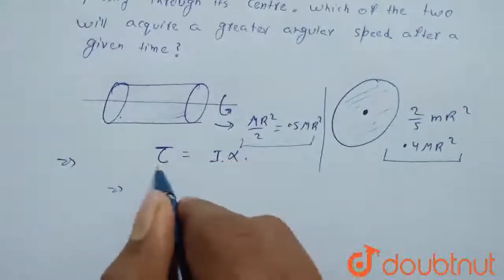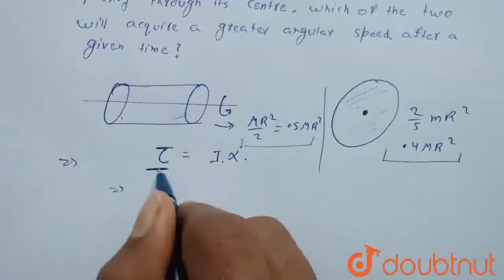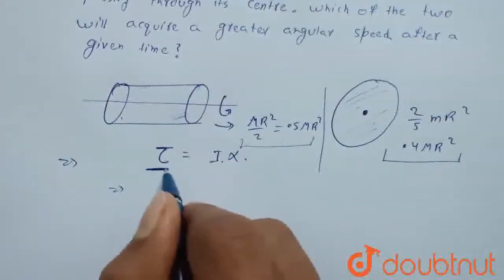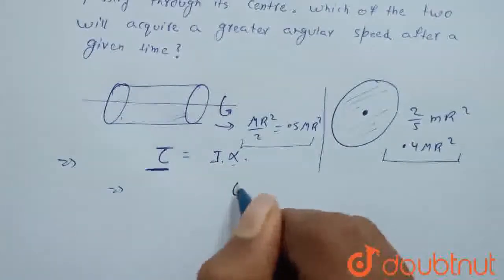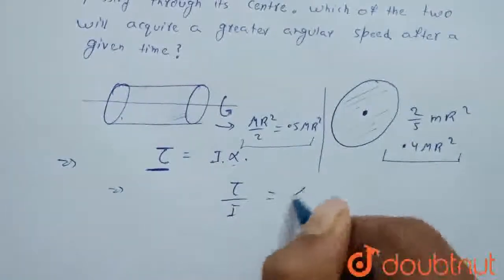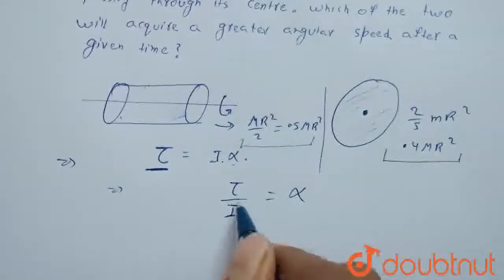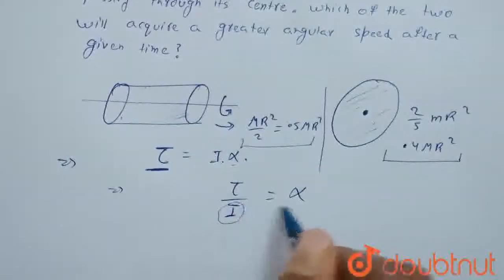If we have the same torque, then α is written as torque divided by I. So if moment of inertia is greater, then α will be less.